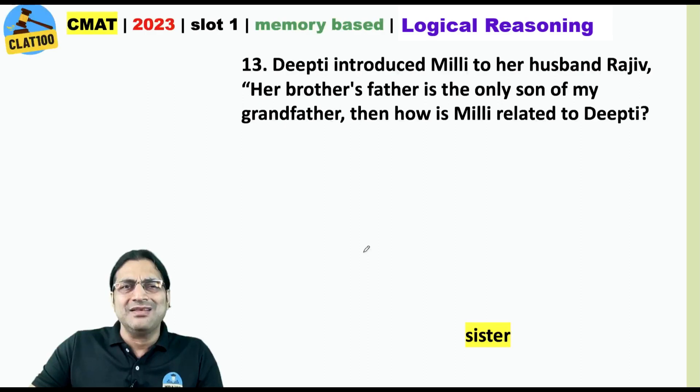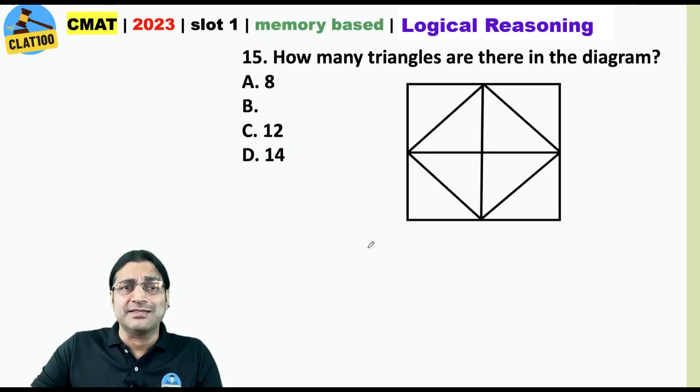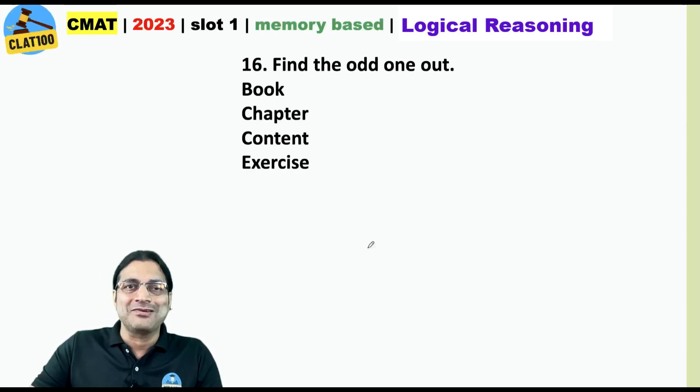Deepti and Millie. This one was a simple one. Sister, of course. This also was quite simple. This is your answer. And we remember that this was the last option. How many triangles are there in the diagram? 12. I got 12 and I was still looking for two more. Find the odd one out. The answer is book.